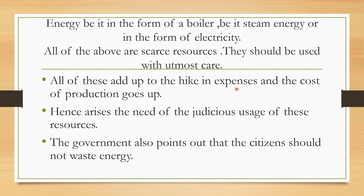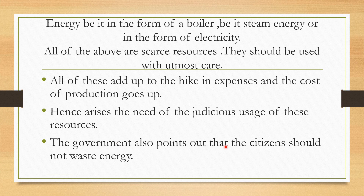All of these add up to the hike in expenses. If you are not vigilant about using sources of energy and shutting down switches, your expenses will rise because energy is at a cost. Your expenses are going to go up, and the cost of production definitely will also go up. Hence arises the need for the judicious usage of these resources. If your expenses go up, so does the cost of production, and your profits will go down. So all of us have to come together so that expenses and cost are kept within limits and we can increase our profits. The government also points out that citizens should not waste energy — if you use it judiciously and rationally, it can be put to use in other forms as well, serving the needs of other people.